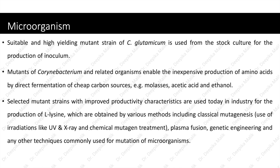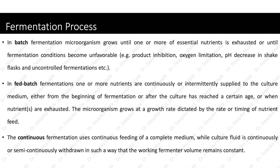Three main approaches are available for the fermentation process. First, in batch fermentation, organisms grow until one or more essential nutrients is exhausted or until fermentation conditions become unfavorable, e.g., product inhibition, oxygen limitation, or pH decrease. Second, in fed-batch fermentation, one or more nutrients are continuously or intermittently supplied to the culture medium, either from the beginning or after the culture has reached a certain age or when nutrients are exhausted. The microorganism grows at a growth rate dictated by the rate or timing of nutrient feed. Third, continuous fermentation uses continuous feeding of a complete medium while culture fluid is continuously or semi-continuously withdrawn such that the working fermenter volume remains constant.